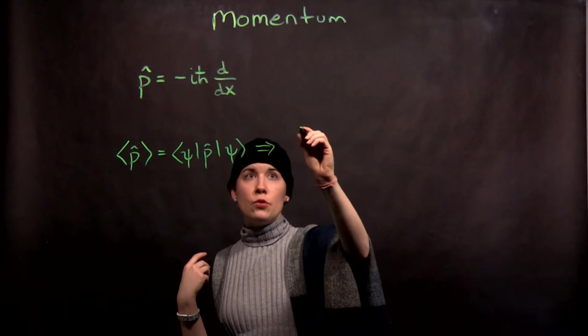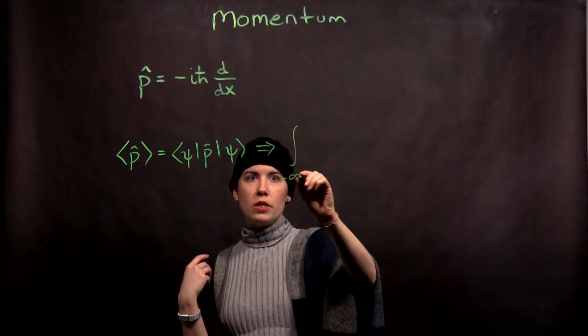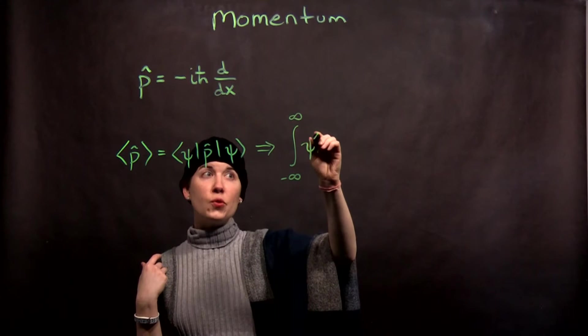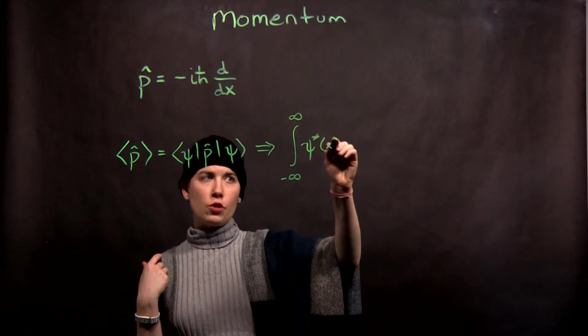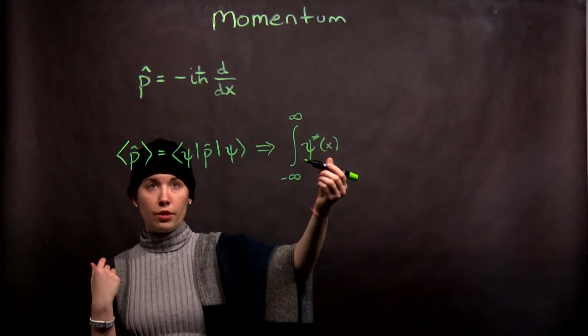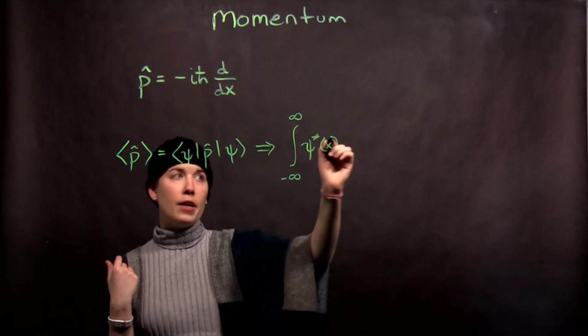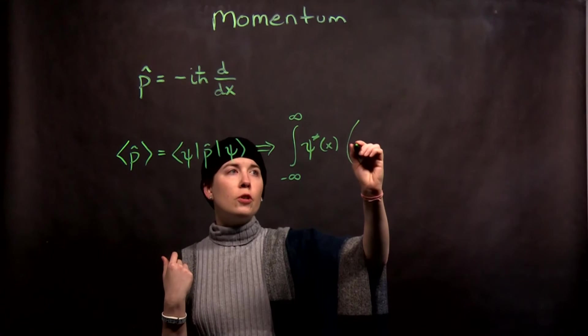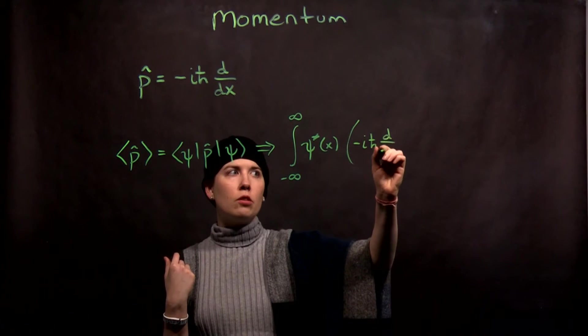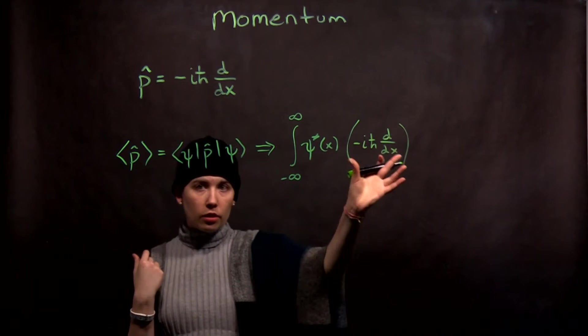So we have an integral from negative infinity to infinity. And now I have psi star of position. Remember that that psi bra is going to become complex conjugate of your function. Now I have my operator. Again, the first few times you do this, don't skip any steps at all. I'm literally writing it here.